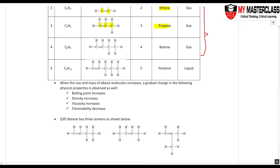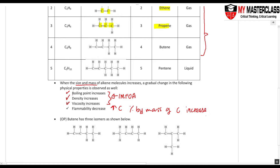The physical properties of alkenes: as the number of carbons increases — as size and mass increase — boiling point increases, density increases, and viscosity increases. This is linked to intermolecular forces of attraction. Flammability will decrease as carbon chain length increases, because the percentage by mass of carbon increases, making it harder to burn completely to carbon dioxide.